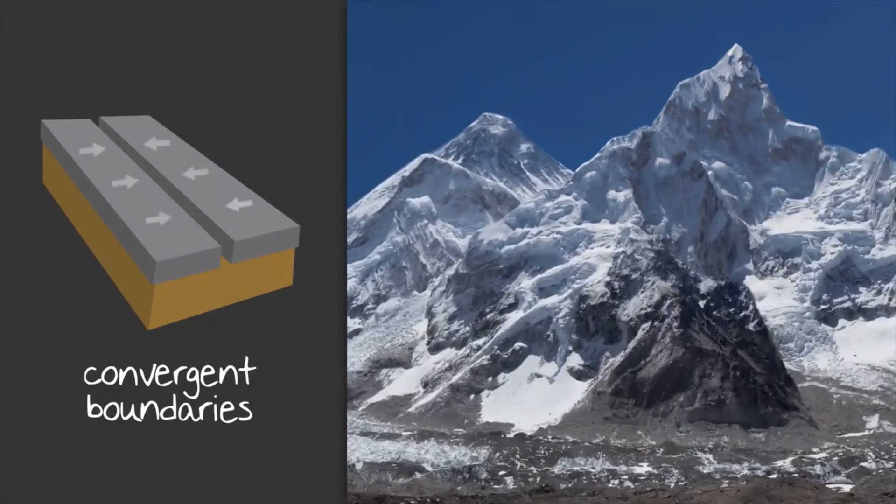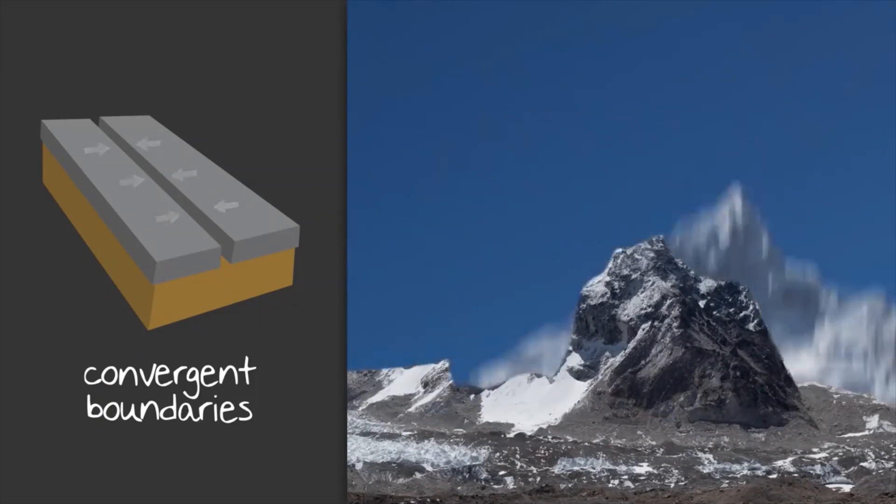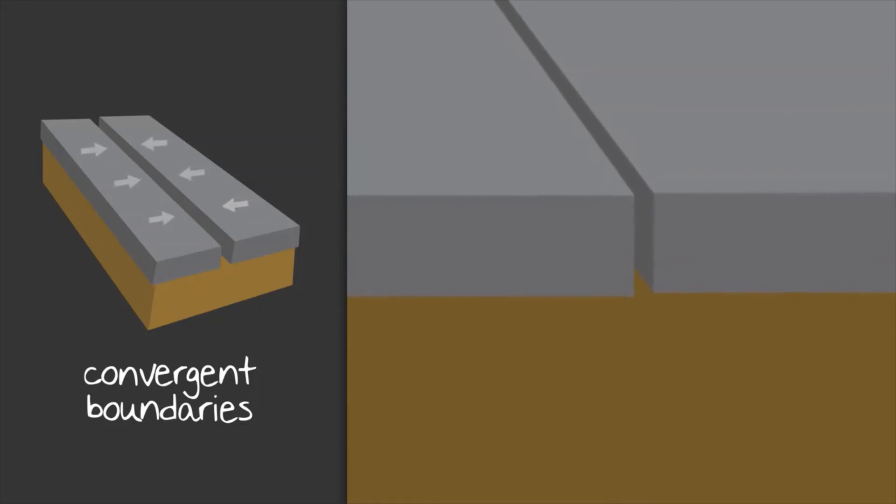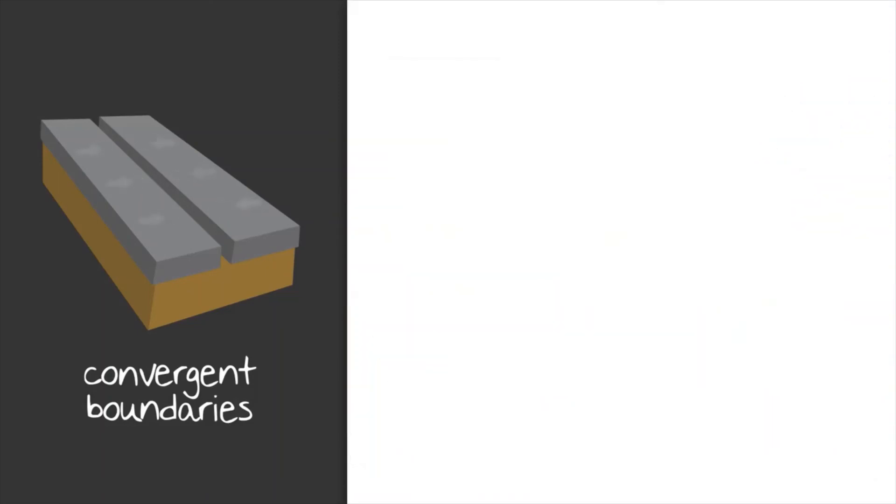So as you can imagine, it takes thousands of years for these mountains to form. But although movement at convergent boundaries is usually gradual, as pressure underground builds, the impact above ground can be quick and violent. Fast movement or slipping of the land can result in earthquakes either above ground or under the ocean.